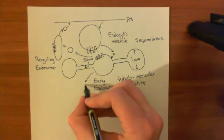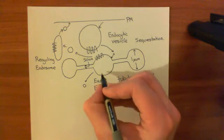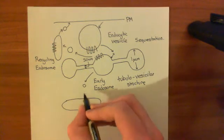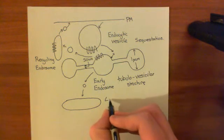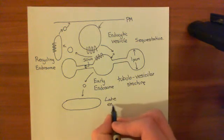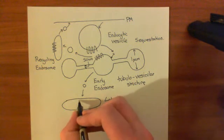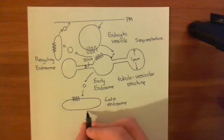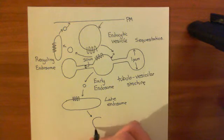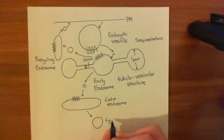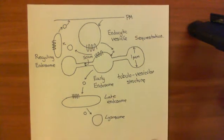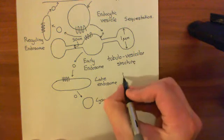In addition, vesicles can bud off from the early endosome and go to a structure known as the late endosome. The beta-2 adrenergic receptor then ends up in the late endosome. If you really want to destroy it, it can then go to the lysosome, where there are many enzymes which can break the receptor down. This happens by a vesicle budding off the late endosome and going to the lysosome. This is the endocytic pathway.